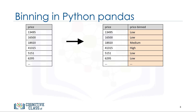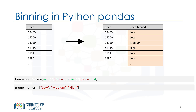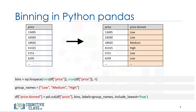In Python, we can easily implement the binning. We would like three bins of equal bin width, so we need four numbers as dividers that are equal distance apart. First, we use the numpy function linspace to return the array bins that contains four equally spaced numbers over the specified interval of the price. We create a list group_names that contains the different bin names. We use the pandas function cut to segment and sort the data values into bins.